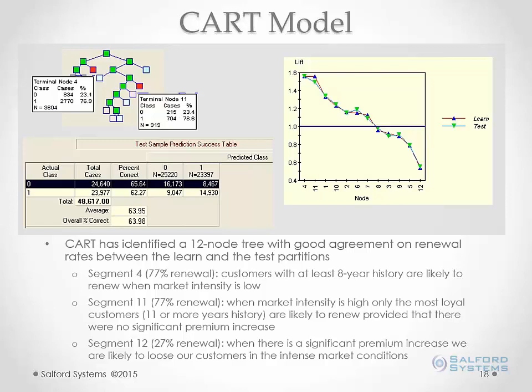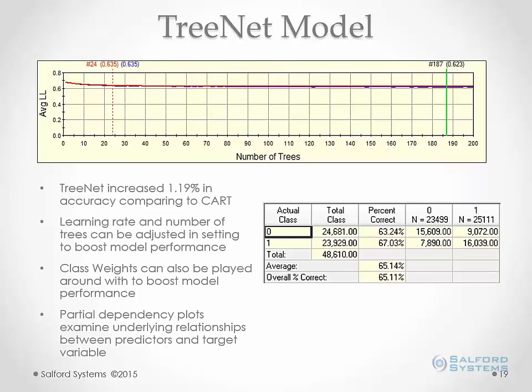After the CART model, running a TreeNet model to boost accuracy: a standard default TreeNet model only increased accuracy by about 1.19%. There are a number of different TreeNet parameters you can play with — such as learn rate or number of trees — to boost model performance, and you can adjust class weights if predicting renewal is harder than non-renewal. Partial dependency plots are useful to examine the underlying relationships.